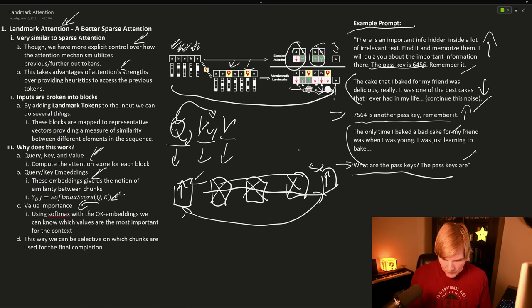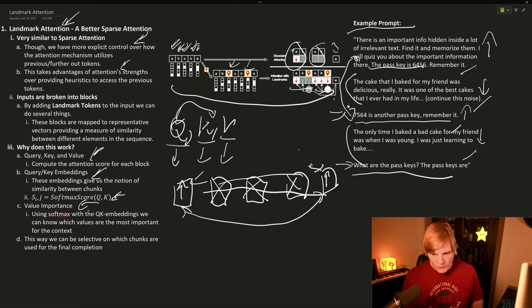It would score these two chunks here as being much higher, these being very low, and our embeddings would relate these two chunks of text together.